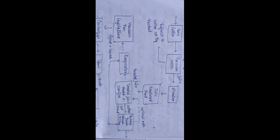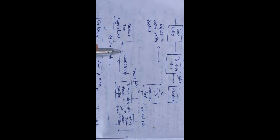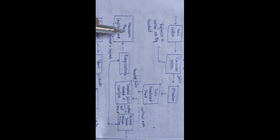In the evaporator, about 40 percent of the water is removed. Then a mixture of syrup and crystals comes out from the evaporator, and that is sent to the vacuum pan crystallizers. The vacuum pan crystallizer separates the crystals and the syrup.